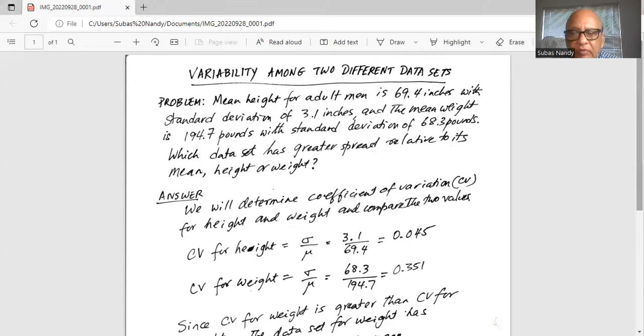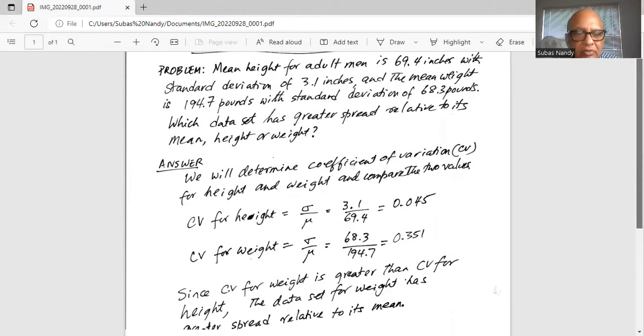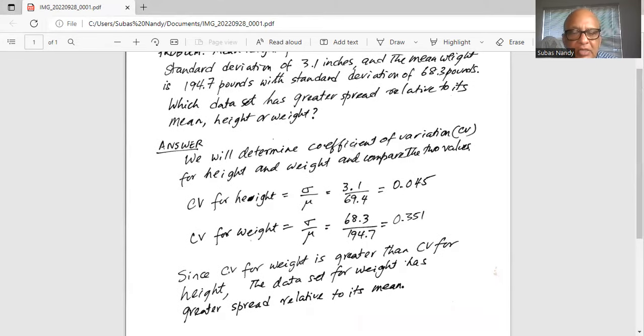So CV for weight is greater than CV for height. The data set for weight has greater spread relative to mean. So the variability in height is 4.5% relative to its mean.